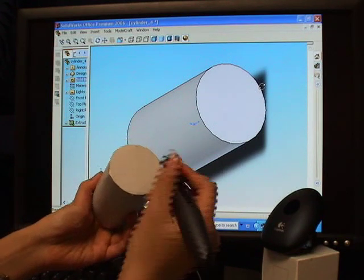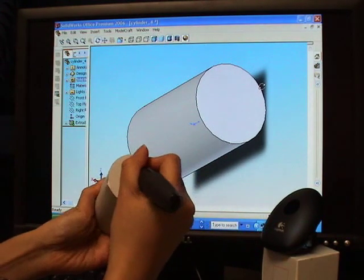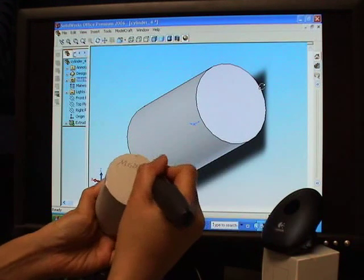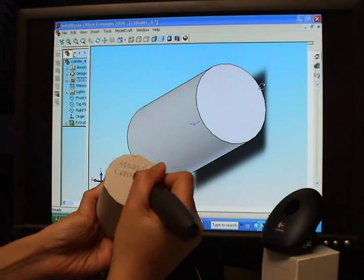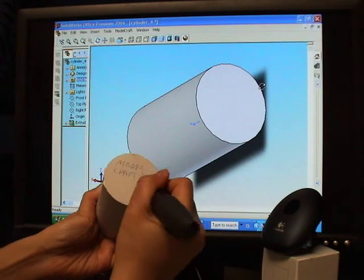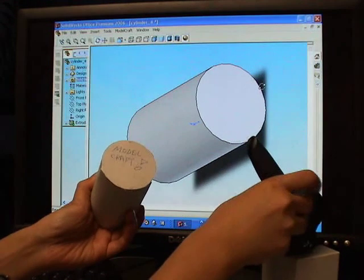Any surface of the resulting model can then be directly annotated using a Logitech IO2 digital pen. The pen contains an internal camera at the tip that translates the unique pattern of dots on the paper into sequences of 2D coordinates.